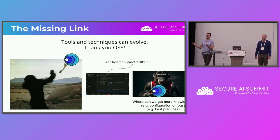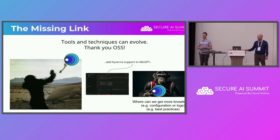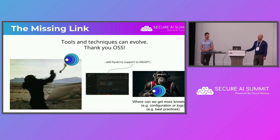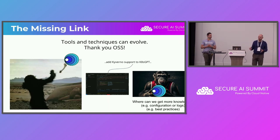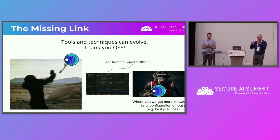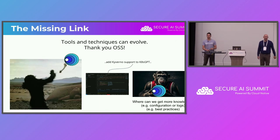It's a bastardized RAG because we're using Kyverno to generate context and Istio to generate context. The best approach would be to find or build a model designed for this, rather than square-pegging open models. We deliberately kept it simple — there are so many tools and techniques, but we wanted to show it is simple to do if you keep the focus. Thank you.